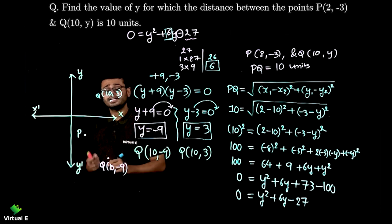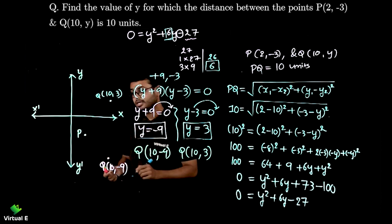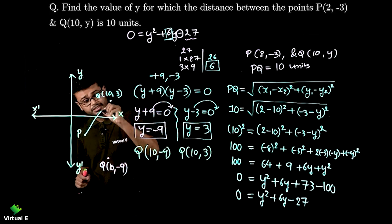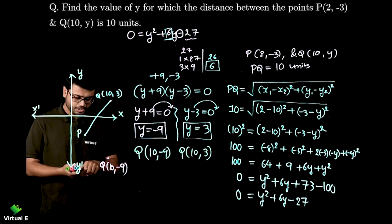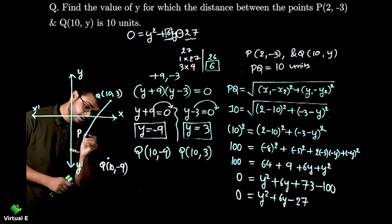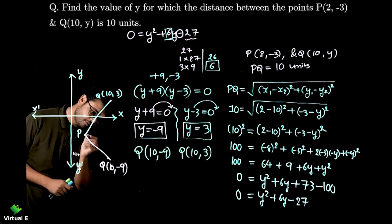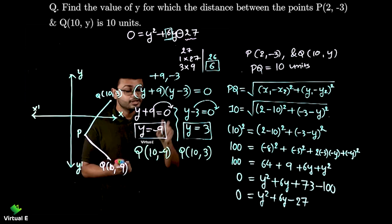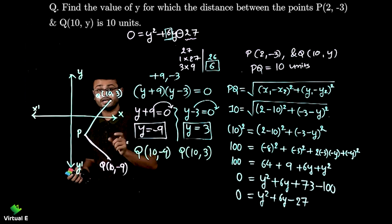Now why are we getting two different points here? Because distance is given 10 units. So you can have distance in this direction 10 units or you can have distance in this direction also as 10 units. So remember that this is the reason we are getting two answers and both of them are correct.